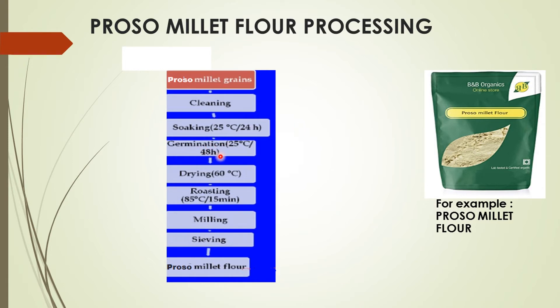Then we have germination, which is done to change the amino acid composition and improves availability of vitamins and minerals. Then we have drying, which is done at 60 degrees Celsius to remove the excess moisture content. Then after that we have roasting, which is done at 85 degrees Celsius for 15 minutes. Roasting basically increases the digestibility and decreases the hardness also.